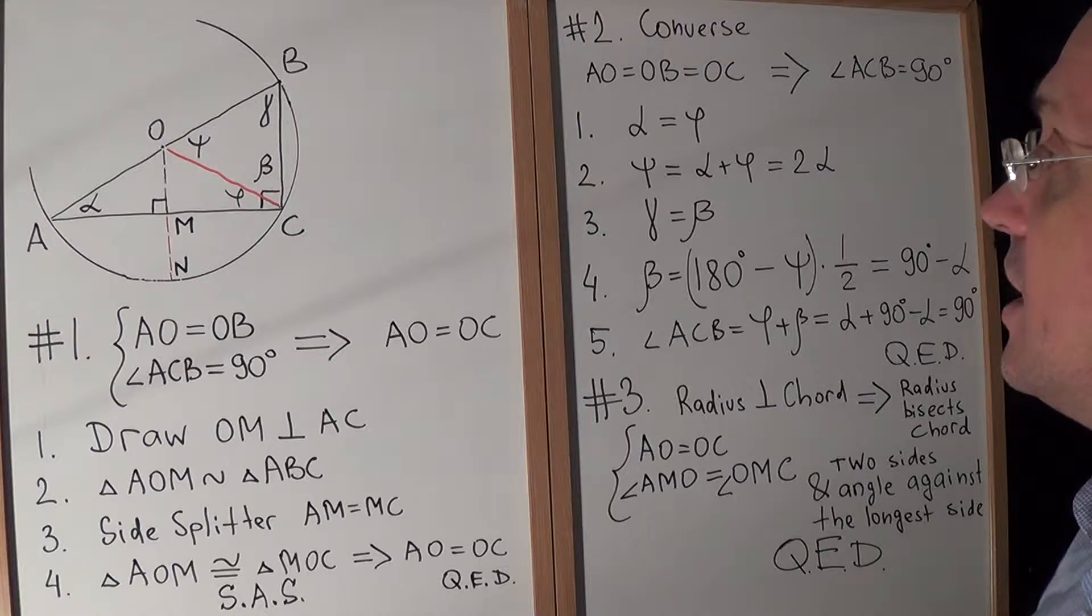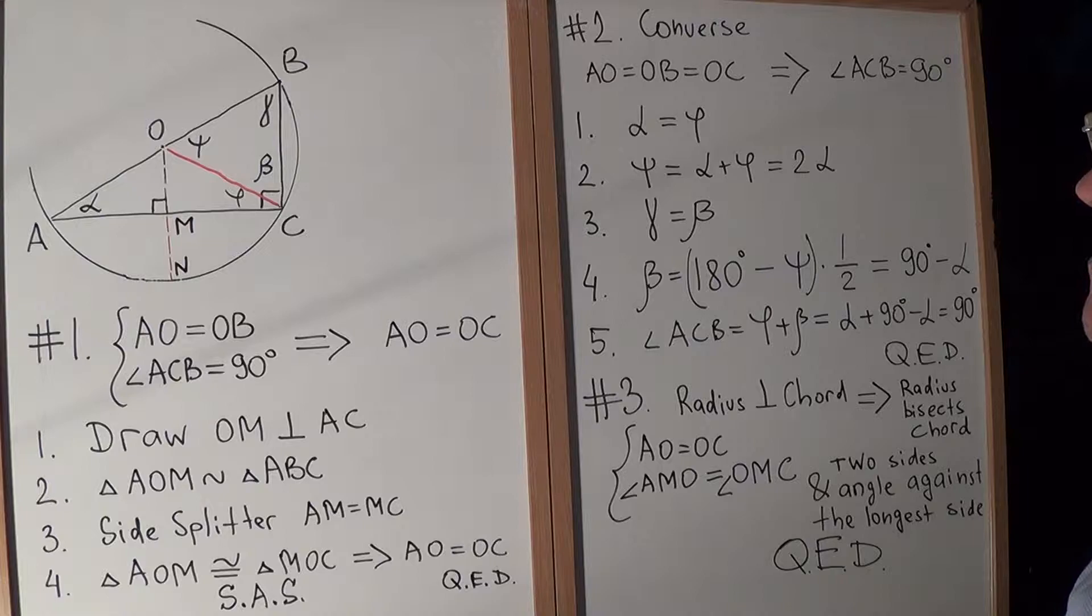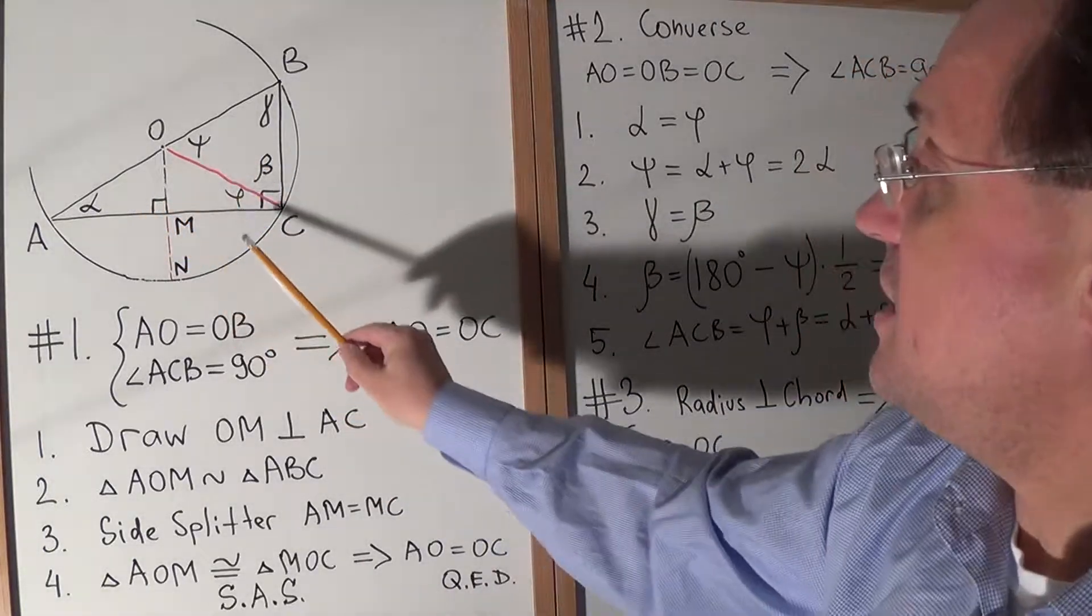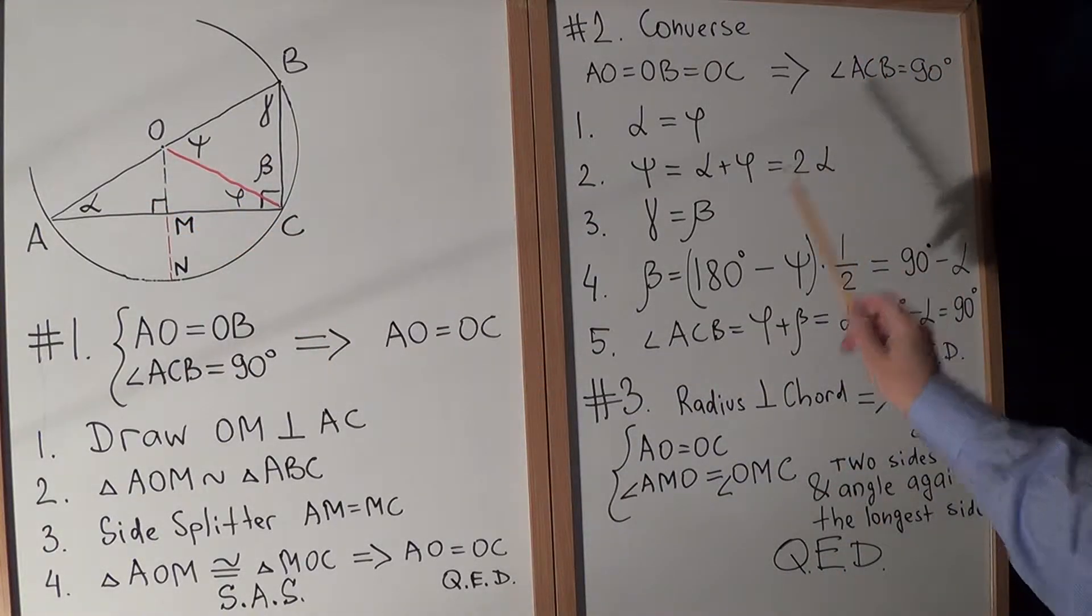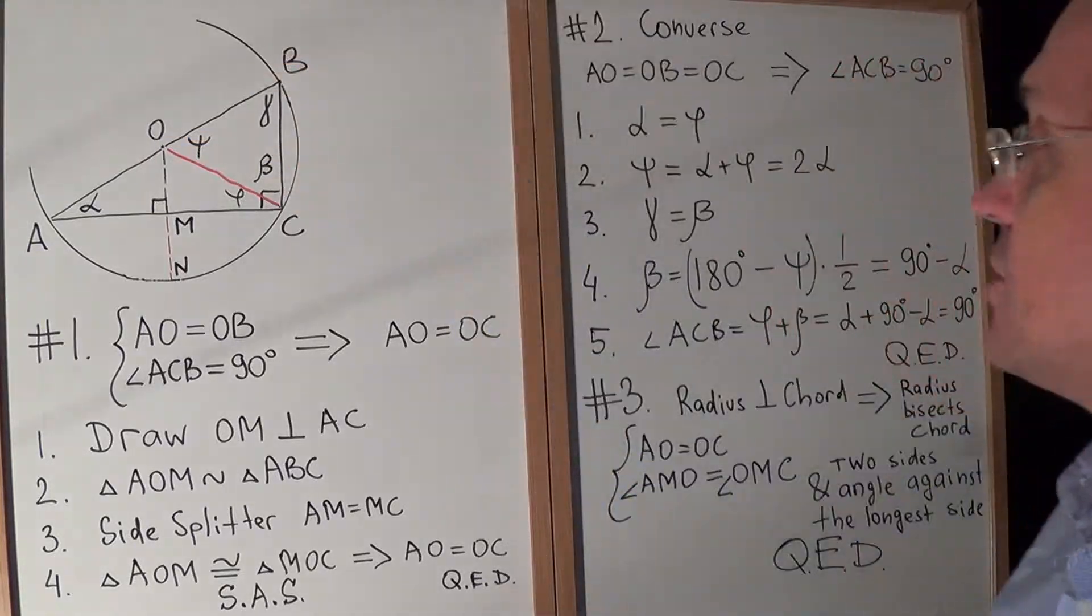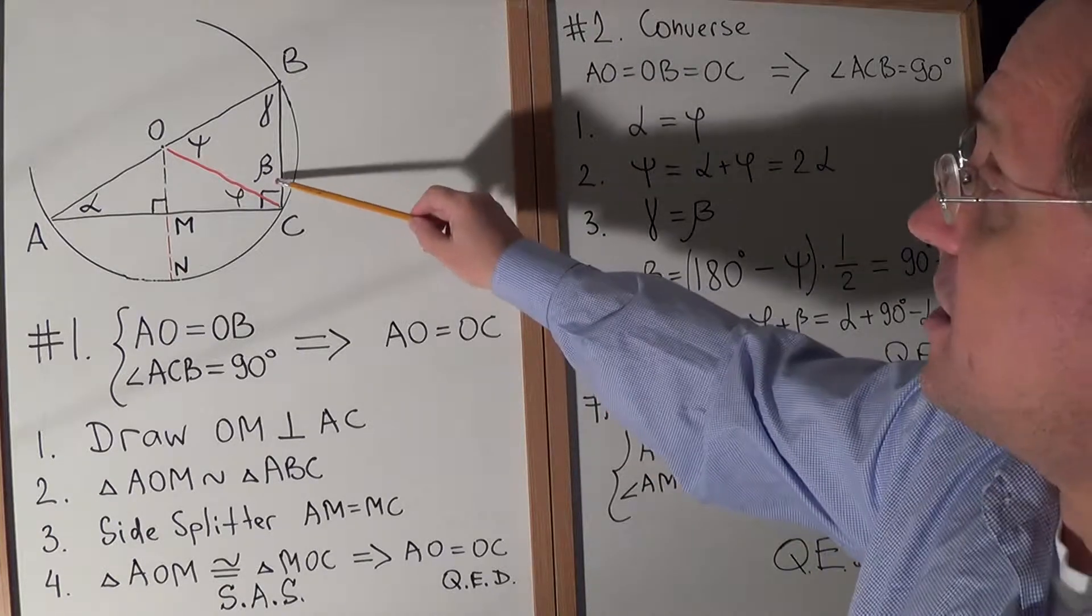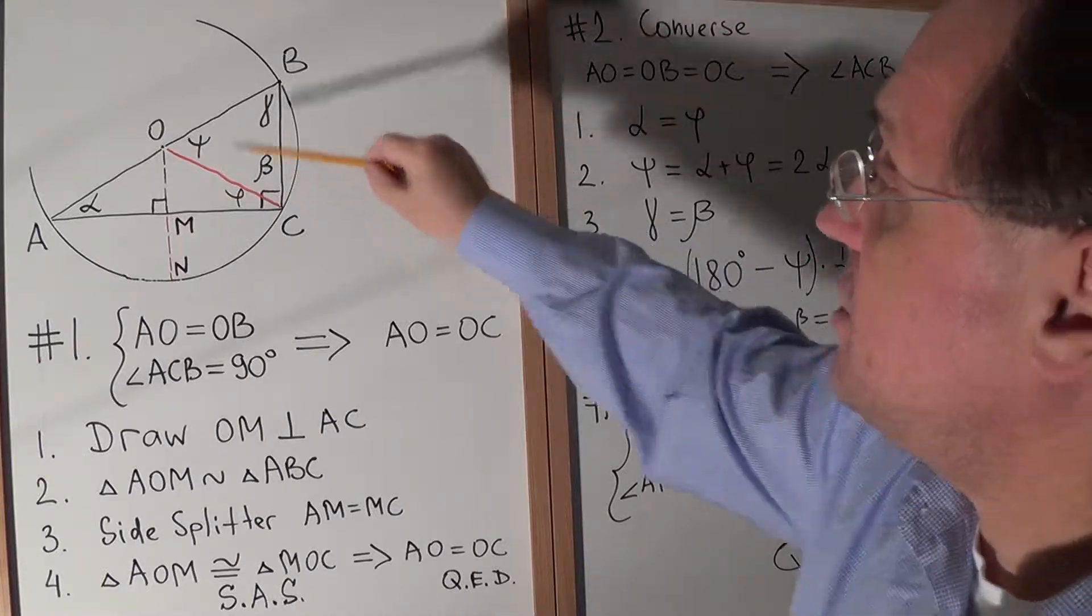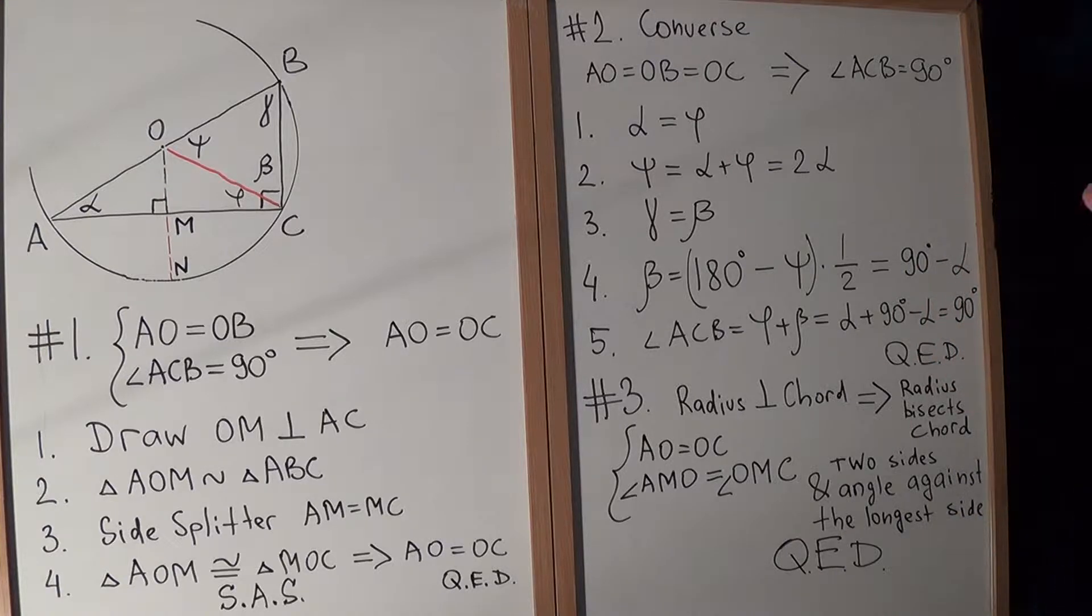Alpha equals phi because triangle AOC is isosceles. Psi equals alpha plus phi, external angle equals sum of two internal angles, or two alpha. Gamma equals beta, COB is isosceles. Now we can see that in this case, beta would equal 180 degrees for COB minus psi, and then take half of that.